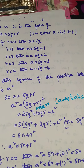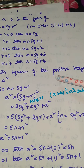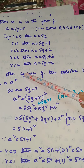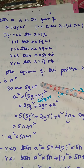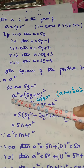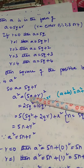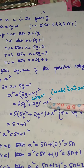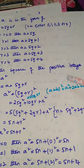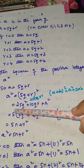Since the question involves squares, we have to square the positive integer. So a squared equals (5q + r) squared. Applying the formula (a + b)² = a² + 2ab + b², we expand: a² equals 25q² plus 2 into 5q into r, plus r squared.